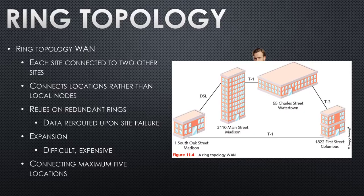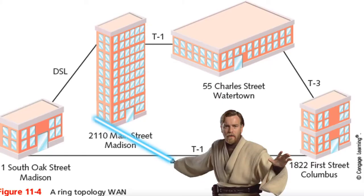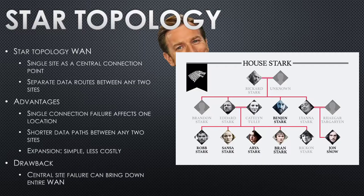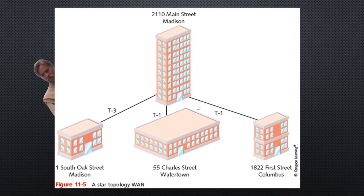Bus and ring are typically cheaper with a smaller subscription fee. Star topology is more what you want — you have a single site as a central connection point and everybody connects up to it. If that single site is up, you're usually good. One of the satellite parts can fail and the rest of the network is fine. But if Main Street goes down, everybody's down — still a weakness.